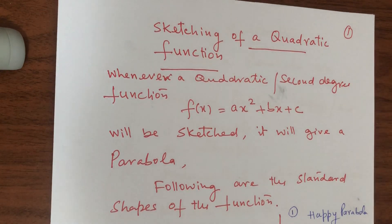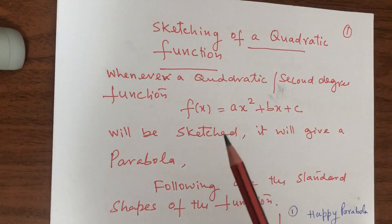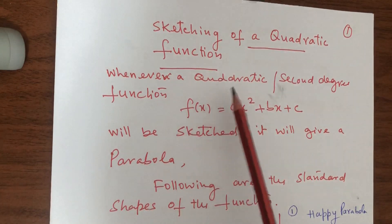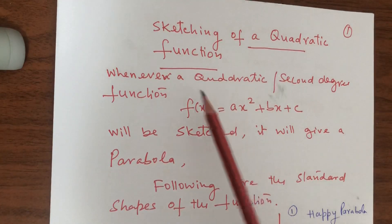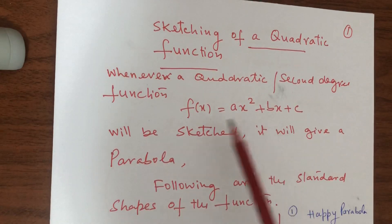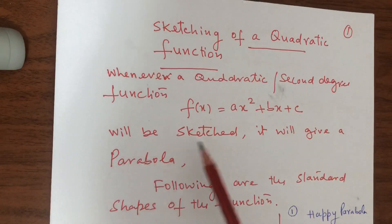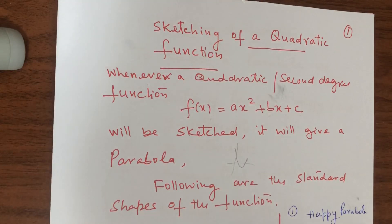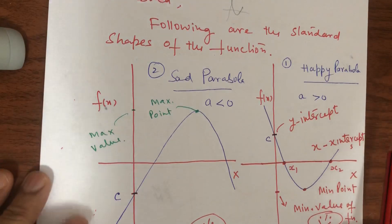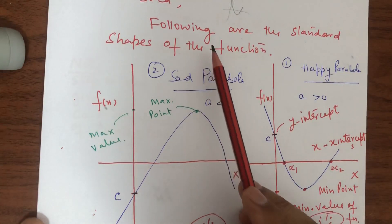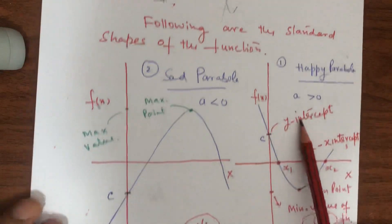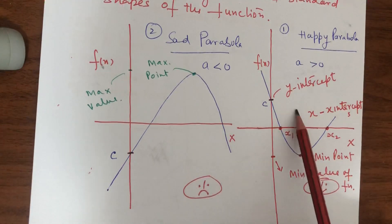Today we are covering the sketching of a quadratic function. Whenever we sketch a first degree equation we get a straight line, but whenever a quadratic or second degree function like f(x) = ax² + bx + c is sketched, it gives a parabola. The following are the standard shapes of the parabola when we sketch this second degree function — we will get one of two types.